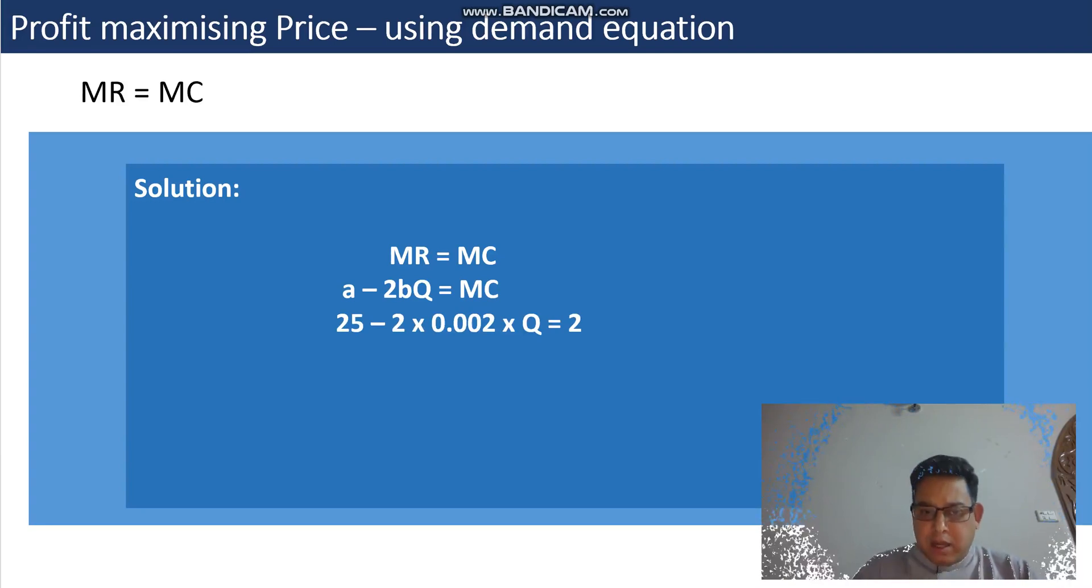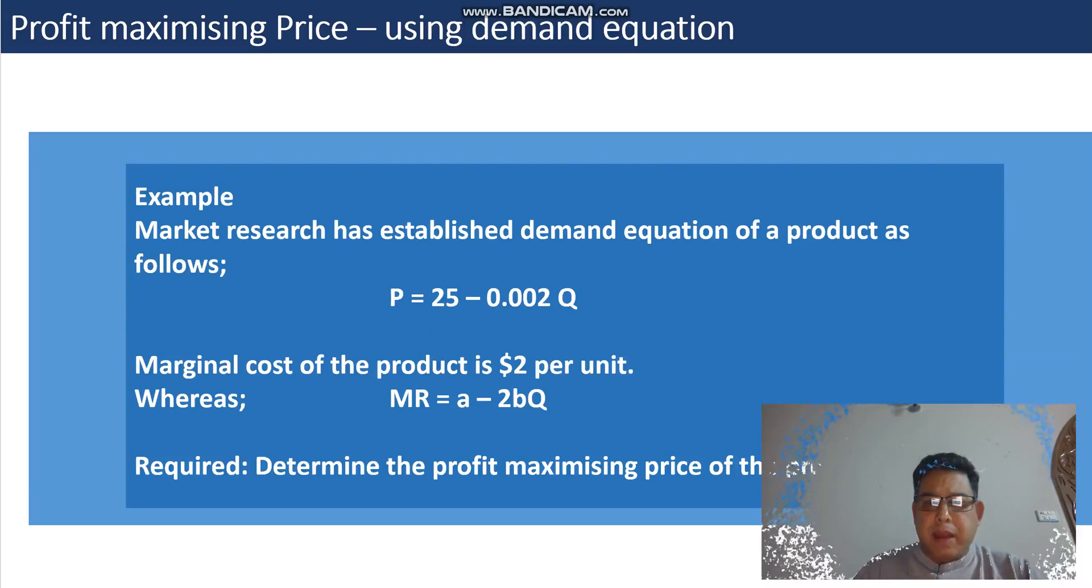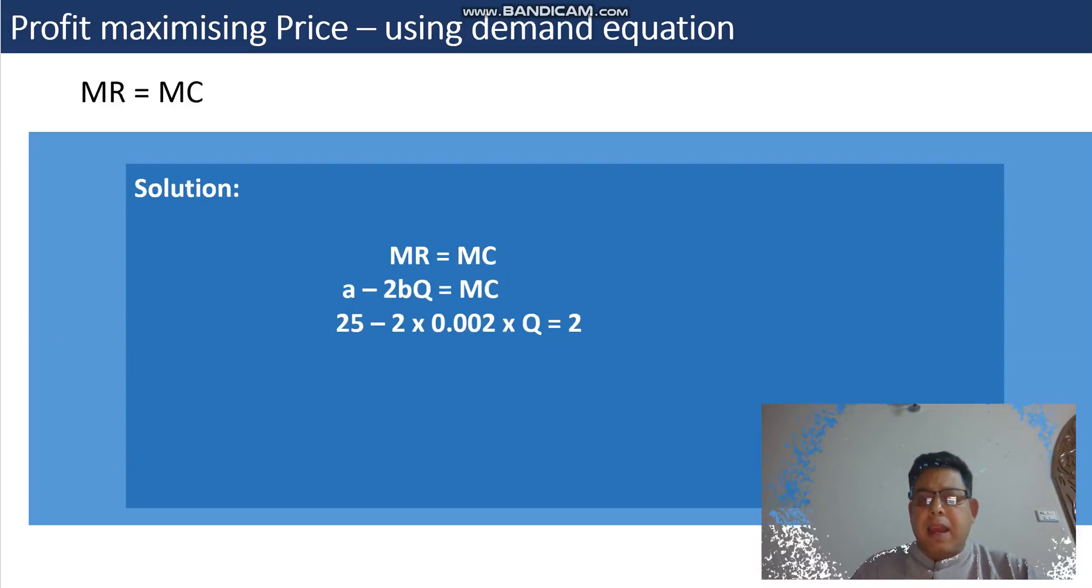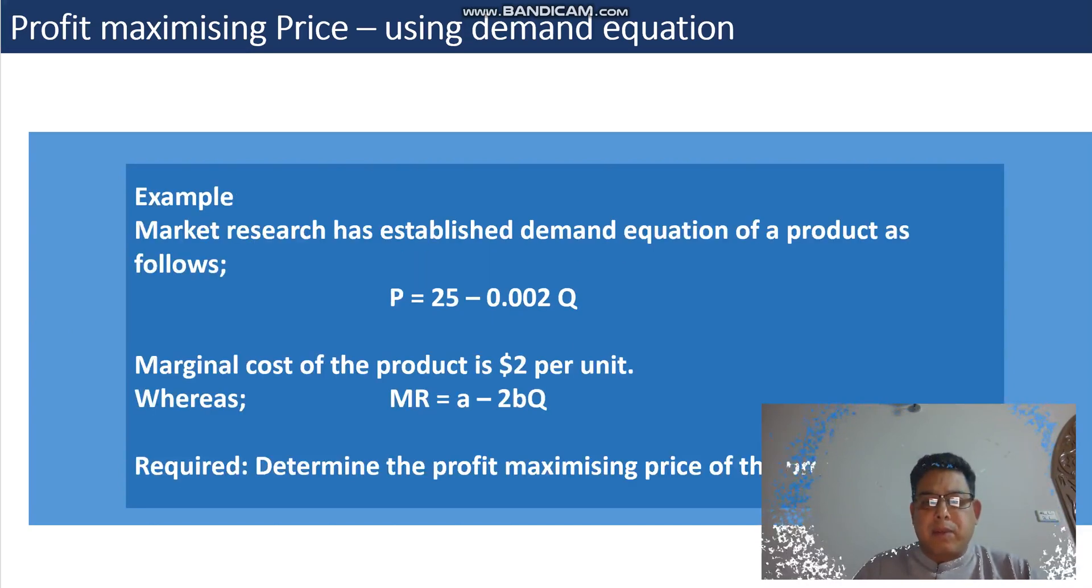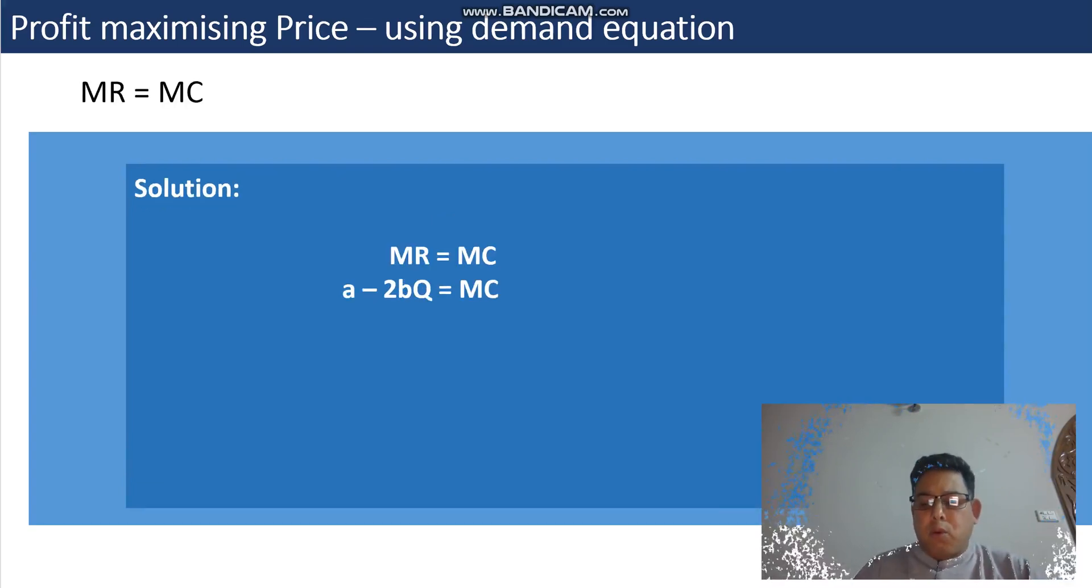A was given as 25, 2 as it is, b value was given as 0.002, and Q as it is equals 2. Because if I take you back to the question, variable cost or marginal cost given was 2.